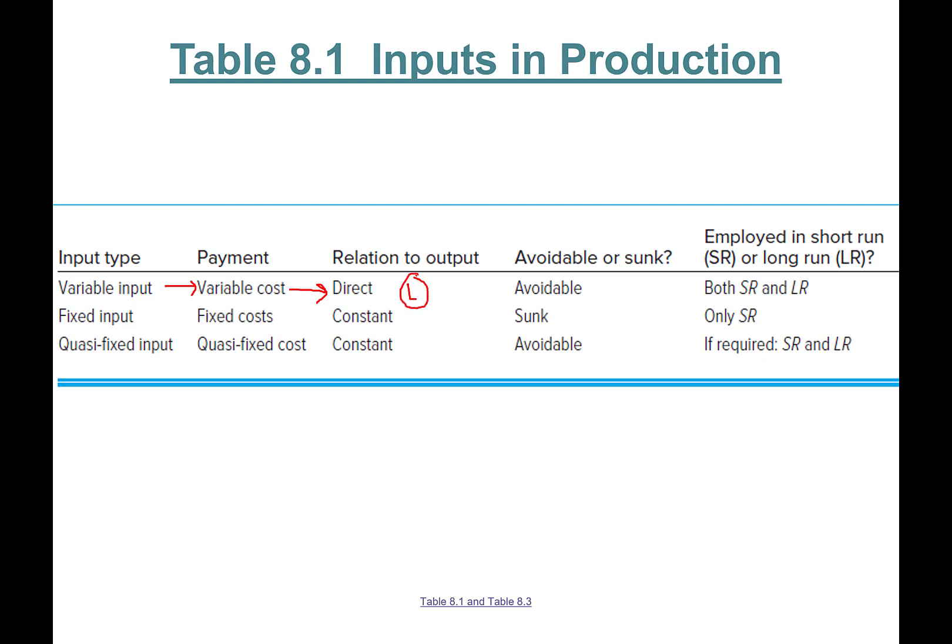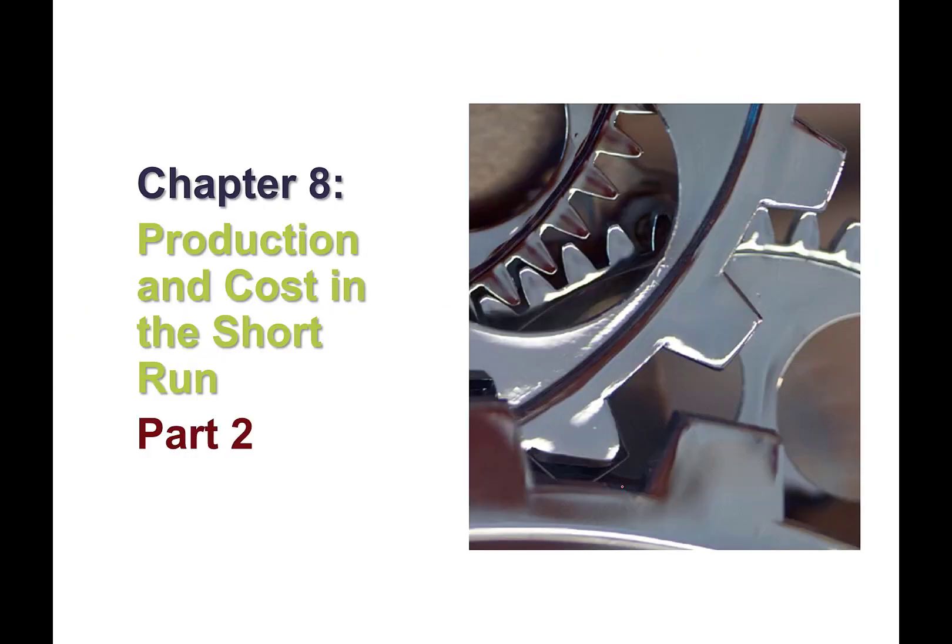This is a useful table. Variable input creates variable cost, relationship to output is direct. Labor goes up, you have more baristas, you're going to sell more coffee. These are avoidable costs employed in both short run and long run. Fixed input causes fixed costs. They are constant, they're sunk, only in the short run. Quasi-fixed costs are fixed, constant, they're avoidable, required in short run and long run. This concludes Chapter 8 Part 1. I'll see you in Part 2.